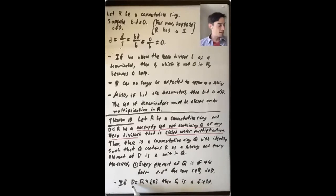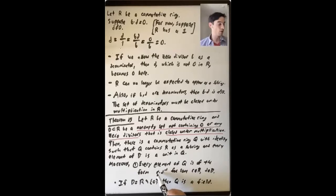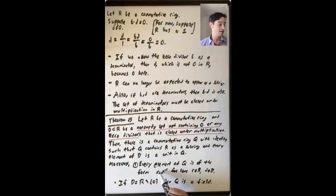If D is every nonzero element of R, then Q is a field — every element in Q has an inverse. Once you believe that every element can be written as r times d inverse, and D is every nonzero element of R, you can start to see where all these inverses come from. I'll say more about that in a minute.